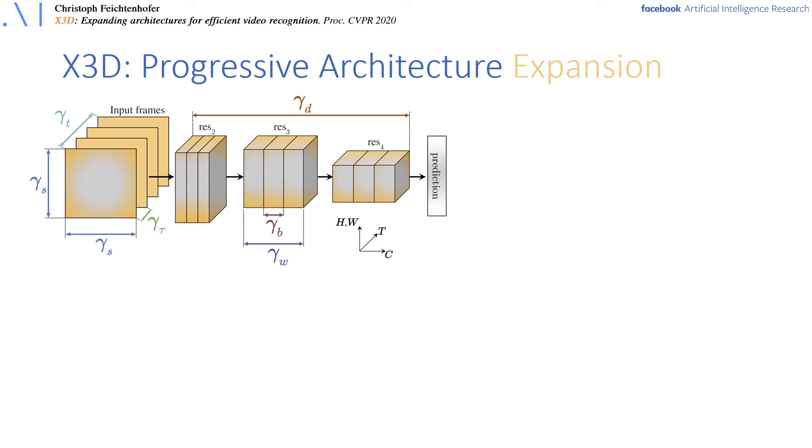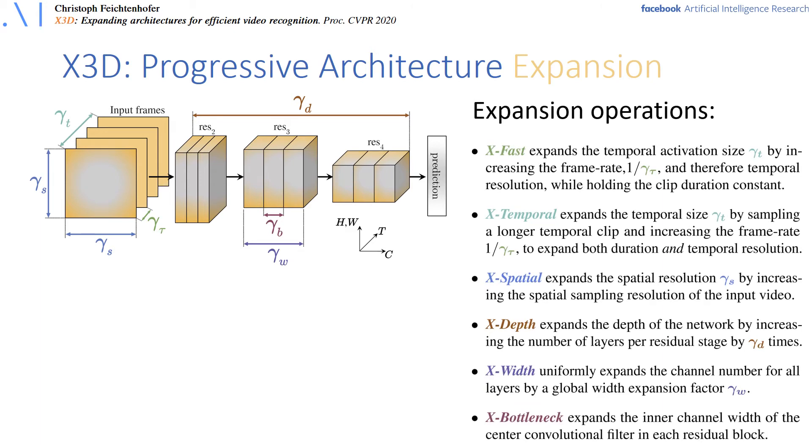Our architecture called X3D, which is expanded across multiple axes for good computation and accuracy trade-off, is progressively expanded from a tiny base 2D image architecture into a spatiotemporal one by expanding across these multiple possible axes.